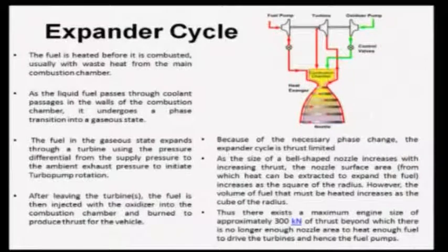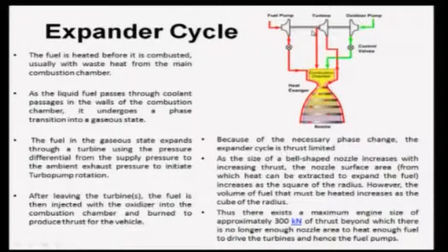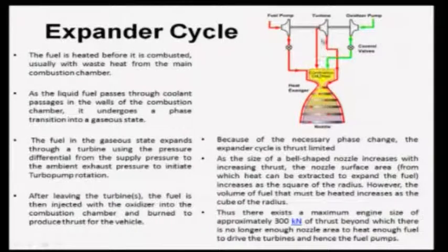The next cycle is the expander cycle. In this cycle, fuel flows through channels all around the combustion chamber and nozzle, absorbing waste heat. Because of this heat absorption, the fuel expands and converts to gas. This gas is then supplied across a turbine, causing it to rotate. The turbine is connected by a shaft to the fuel pump, so the pump draws in fresh fuel. After crossing the turbine, the gas is fed back into the combustion chamber — so there is no wastage of fuel and everything is burned.